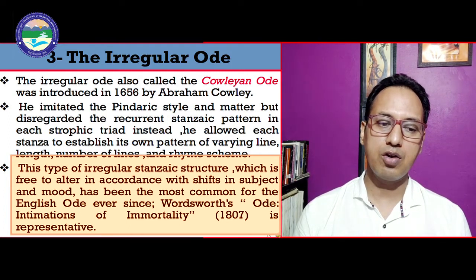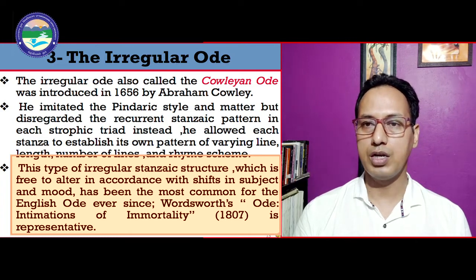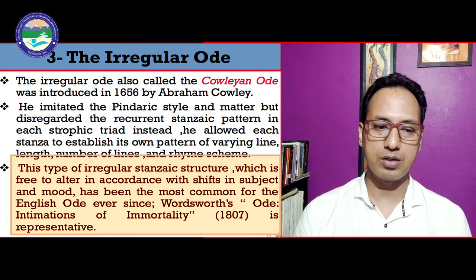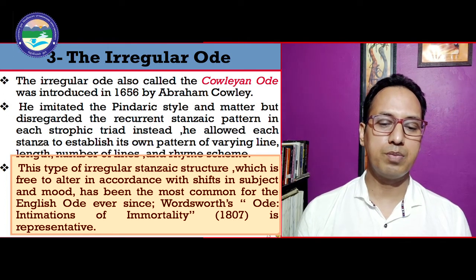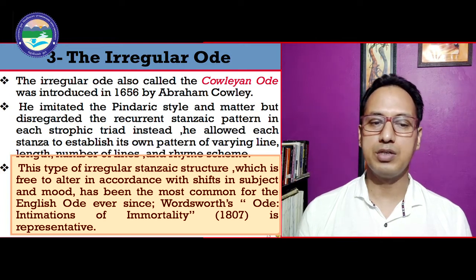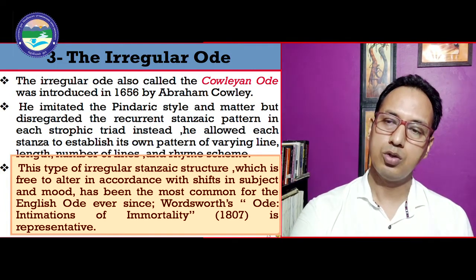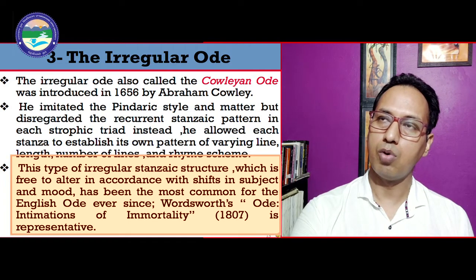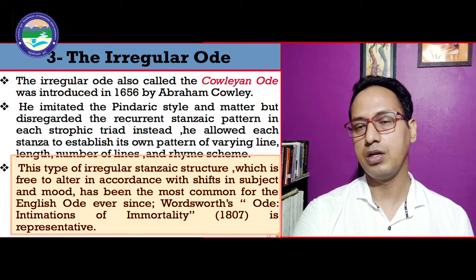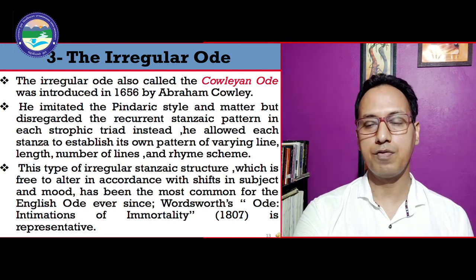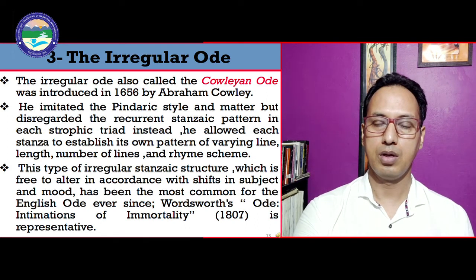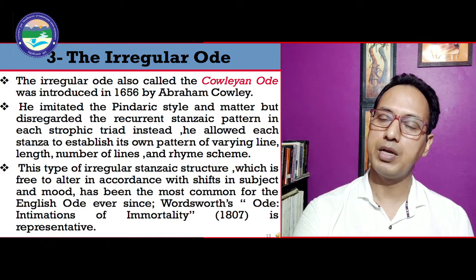This type of irregular stanzaic structure, free to alter in accordance with shifts in subject and mood, has been the most common form for the English ode. Wordsworth's 'Ode on Intimations of Immortality' is also representative of the irregular ode. The Horatian and irregular odes, due to their elasticity and freedom, have been favorites of many English writers.